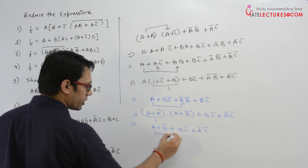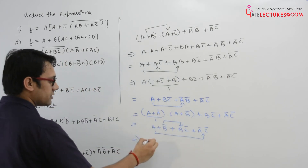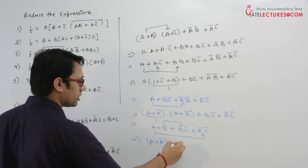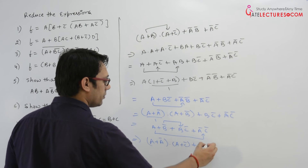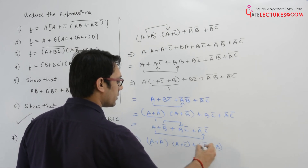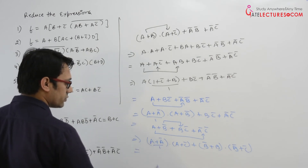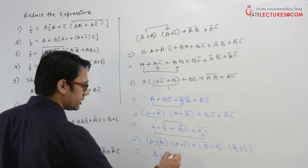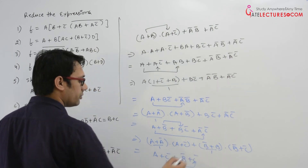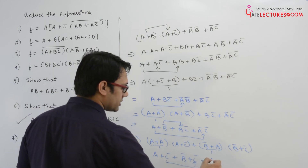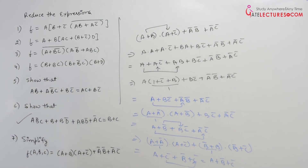Now you can distribute A over this and distribute B over this. So it can be written as (A plus A complement) dot (A plus C complement) plus (B complement plus B) dot (B complement plus C complement). This gives 1 dot (A plus C complement) plus 1 dot (B complement plus C complement). So it is A plus C complement plus B complement plus C complement. Since C complement and C complement are the same, it can be written as A plus B complement plus C complement. It is very simple to understand.